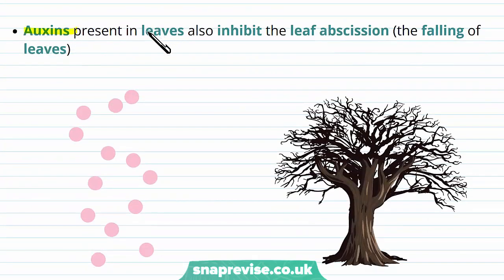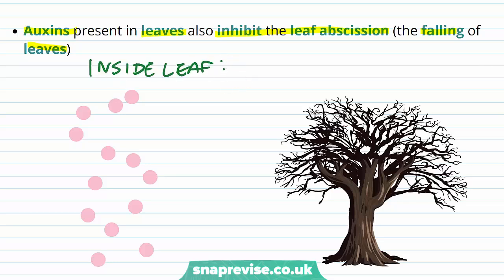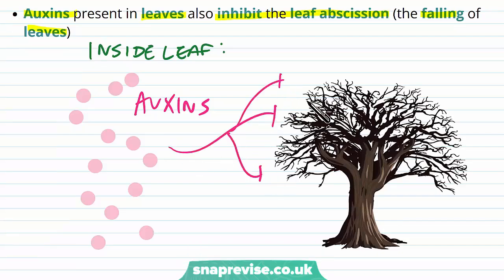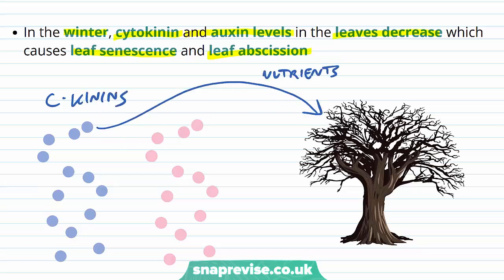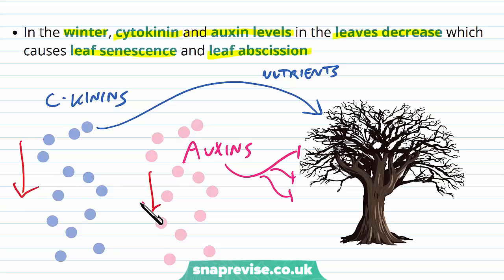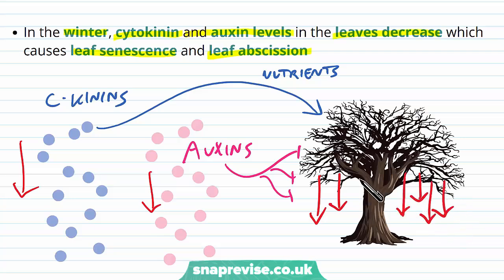The auxins present in the leaves also inhibit leaf abscission — abscission referring to the falling of the leaves. Various auxins normally inhibit the loss of leaves by keeping them attached to the plant. What happens in winter or the early stages of autumn is that both cytokinin and auxin levels in the leaves decrease. Because of this, leaf senescence and leaf abscission occur. The cytokinins promote nutrient supply in the leaf, and the auxins inhibit the leaves being dropped. So if both levels go down in winter, the nutrient supply will go down and the inhibition of leaf fall will stop, meaning leaves start falling off.